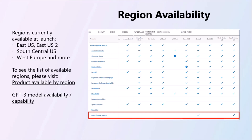Azure OpenAI offers models with different capabilities and price points. Model availability varies by region. Some recently available regions include Canada East, East US 2, Japan East, and North Central US, but there are many more. You can check the models page for the latest availability information. Pay close attention to this when creating your Azure OpenAI resource and make sure to create it in a region where the service is available.